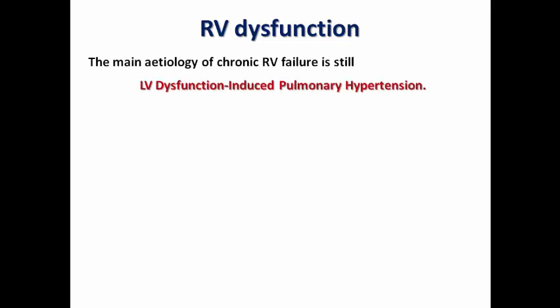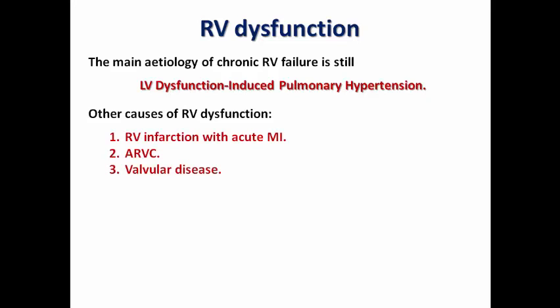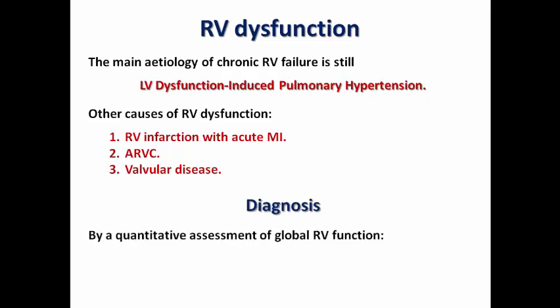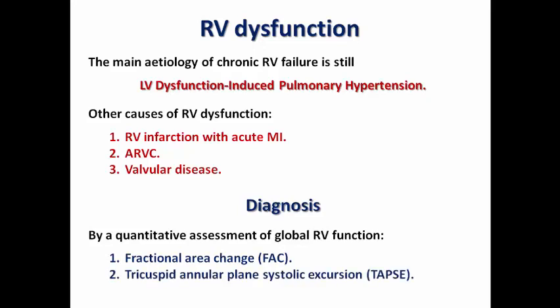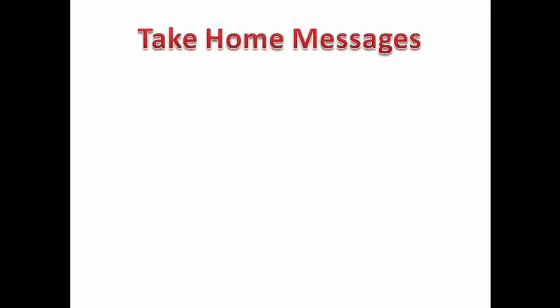The last topic is RV dysfunction. The most common etiology of chronic RV failure is LV dysfunction-induced pulmonary hypertension — secondary RV dysfunction. Other causes of primary RV dysfunction include acute MI, arrhythmogenic RV cardiomyopathy, and valvular diseases such as primary tricuspid regurgitation or congenital pulmonary stenosis. To diagnose RV dysfunction, quantitative assessment of global RV function is needed, including fractional area change, tricuspid annular plane systolic excursion (TAPSE), and S' velocity of the tricuspid annulus using tissue Doppler imaging.